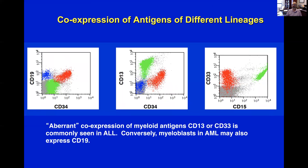The third thing is that tumors co-express antigens of different lineages. Here's an example: a CD34-positive blast population that is positive for CD19, similar to B cells, but the same population is also positive for CD13 and CD33, which are myeloid markers. We can be sure there's a neoplastic process due to co-expression of different lineage antigens. It could be a B-cell lymphoblastic leukemia expressing myeloid markers, or an acute myeloid leukemia expressing CD19 — we'd need to look at the entire case to determine which.